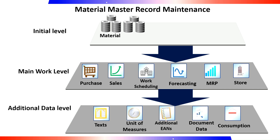Material Master Record Maintenance: The data screens in Material Master Record Maintenance are subdivided into the following types. The initial level means that the data is valid for the entire company. The client level is the highest level in the Material Master hierarchy.